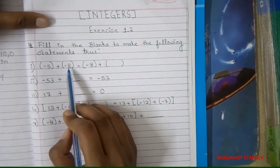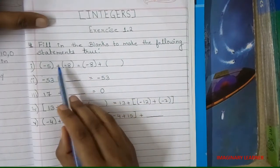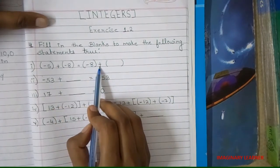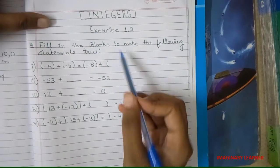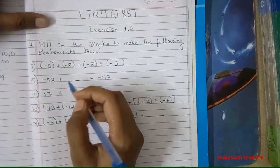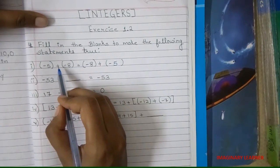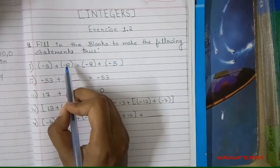So minus 5 plus minus 8 equals to minus 8 plus blank. We have to make the values on both sides equal. Here we will write minus 5, because when we have minus plus minus, these signs combine.